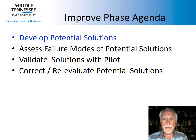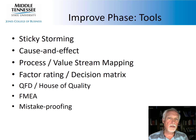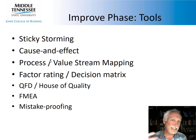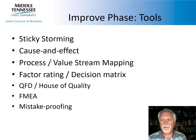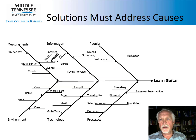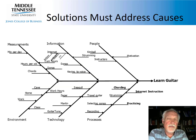So how do we develop potential solutions? How do we choose among potential solutions? Here are a number of tools we might use. Sticky storming, which we've already talked about — an enhanced version of brainstorming, really very different in a lot of ways. Cause and effect diagrams, which we talked about early on in the define phase, and here we are using them again.